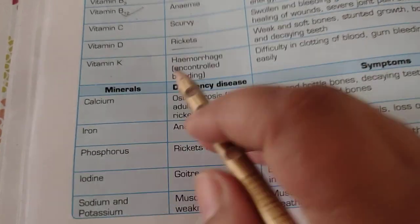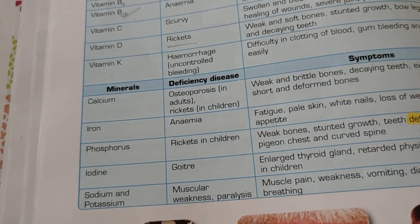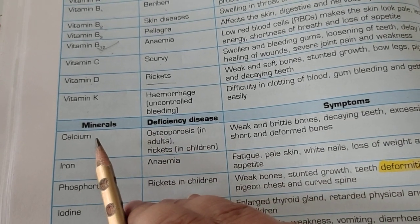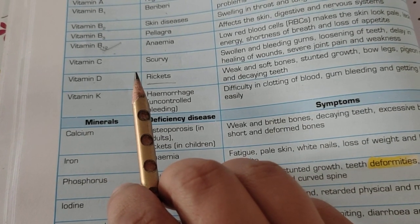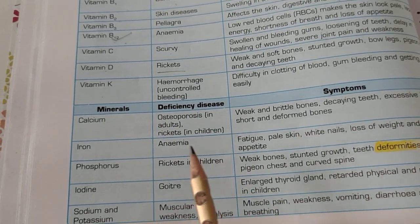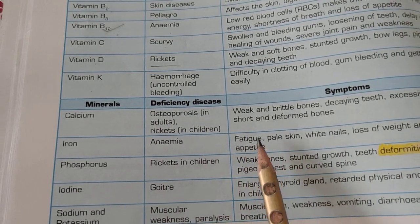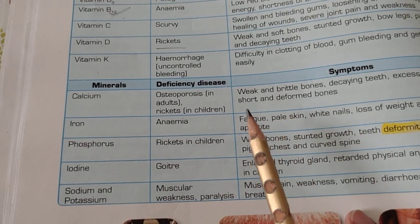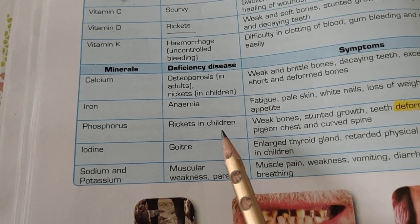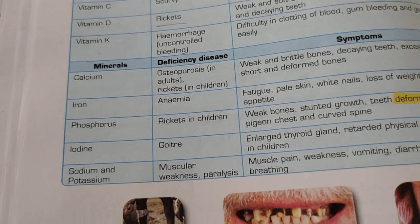Now let us talk about some minerals. The deficiency of calcium causes osteoporosis or rickets, because proper calcium is needed for vitamin D to be formed in the proper amount, which leads to weakening of bones. If your body doesn't have the proper amount of iron, you will be anemic — you will have pale skin and loss of weight. Deficiency of phosphorus also leads to rickets. Iodine deficiency causes goiter, which is the enlargement of the thyroid gland present near your neck.